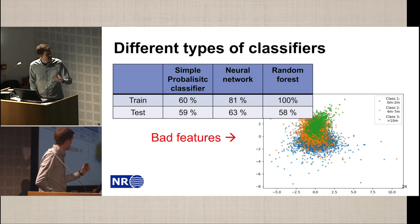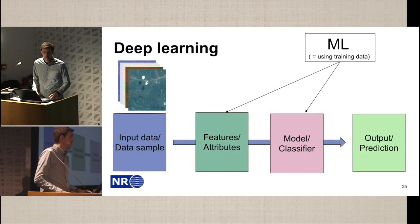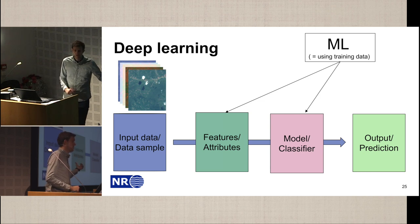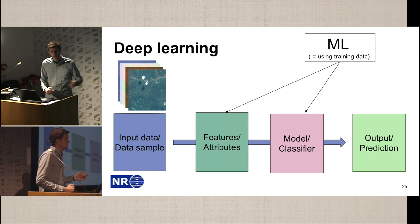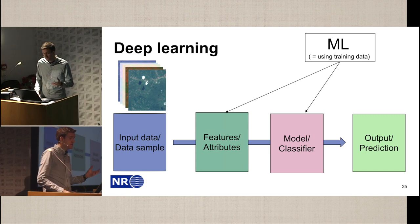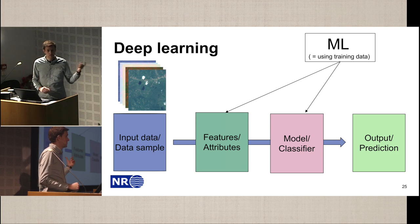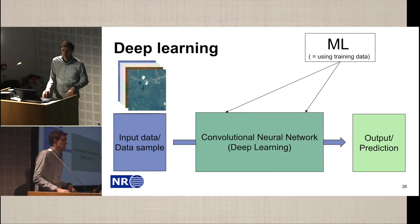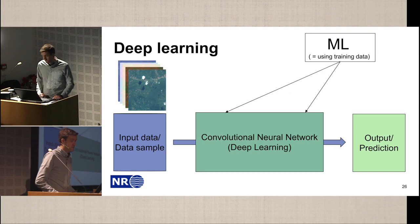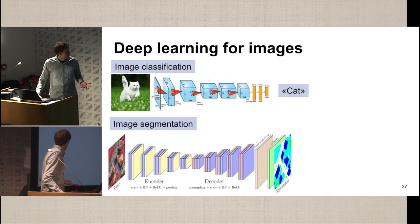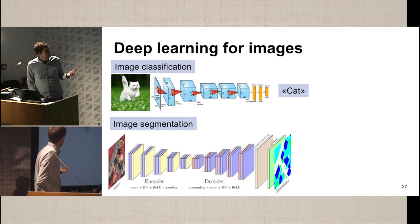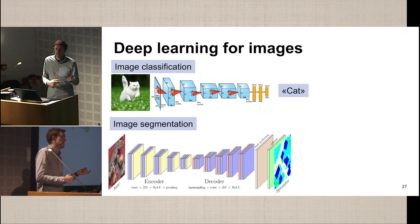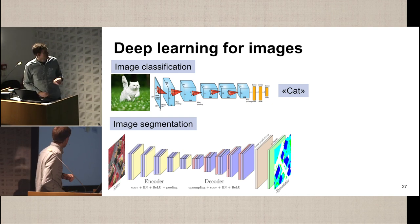This brings me to what we actually did in this project: applying deep learning. In the traditional way, we had input data, used our knowledge to get features, and used machine learning to train the classifier. In deep learning, we use machine learning to do both — we train end to end. For images, we typically use a convolutional neural network. It's a neural network made of convolutions, and it applies layers of convolutions where the filters are optimized to get the right result.